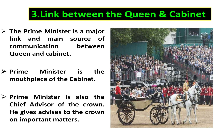Number three, link between the Queen and Cabinet. The Prime Minister is the major link and main source of communication between the Queen and the Cabinet. He plays a vital role in this regard. The British Prime Minister is the mouthpiece of the Cabinet, conveying its views and decisions to the Crown and at the same time conveying the Crown's messages to the Cabinet. Besides, the Prime Minister is also the chief advisor of the Crown and gives advice on important matters.